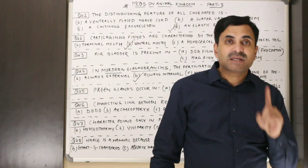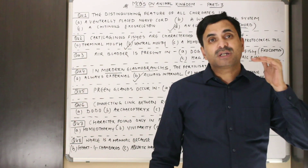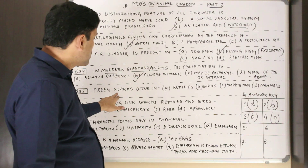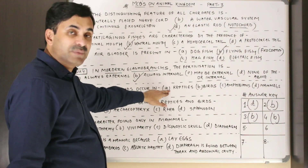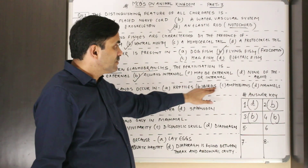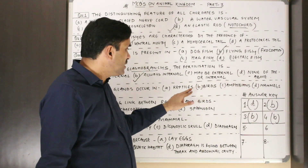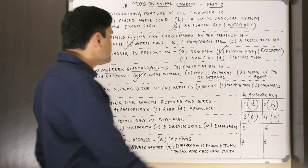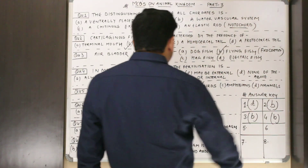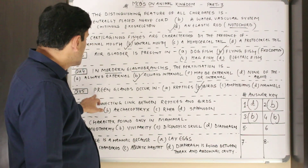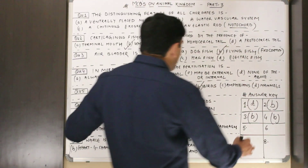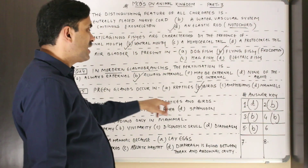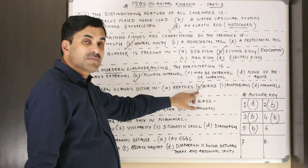Question number five: preen glands occur in — reptiles, birds, amphibians, or mammals? Preen glands are oil glands found below the tail of birds. They are found only and only in birds. Question number five answer: B.